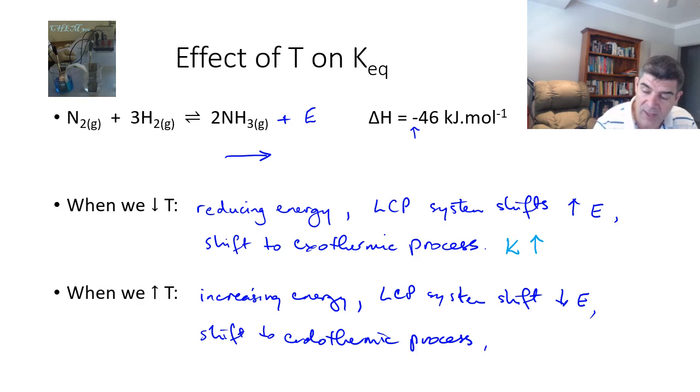And in the one that I have above, obviously the K value will therefore drop, because if it's going to the left, it's going to be increasing the concentration of the reactants and decreasing the concentration of the products.